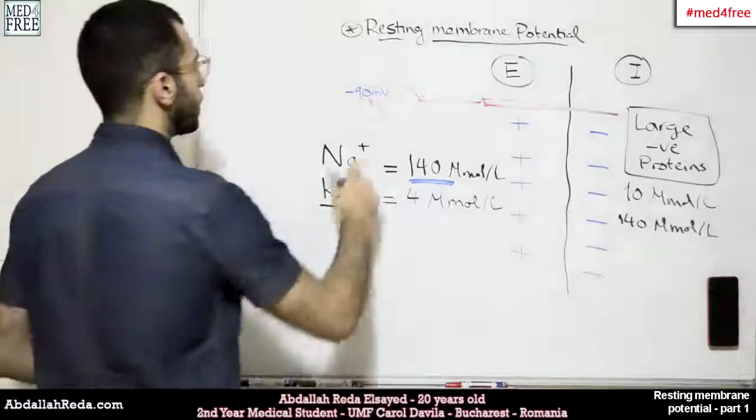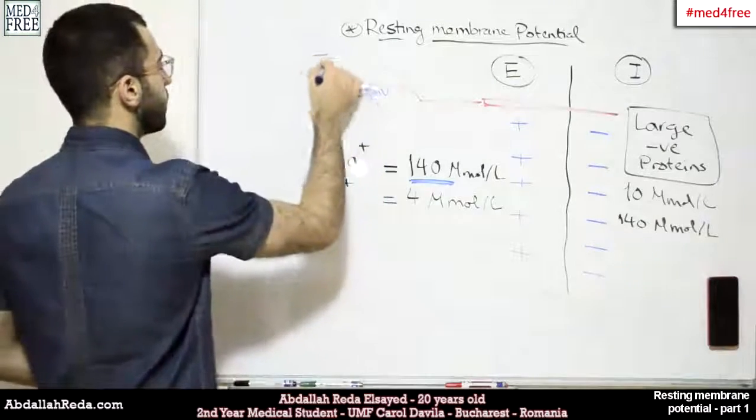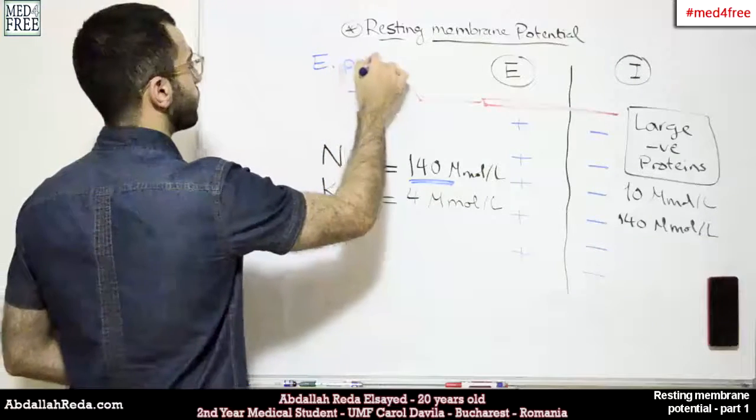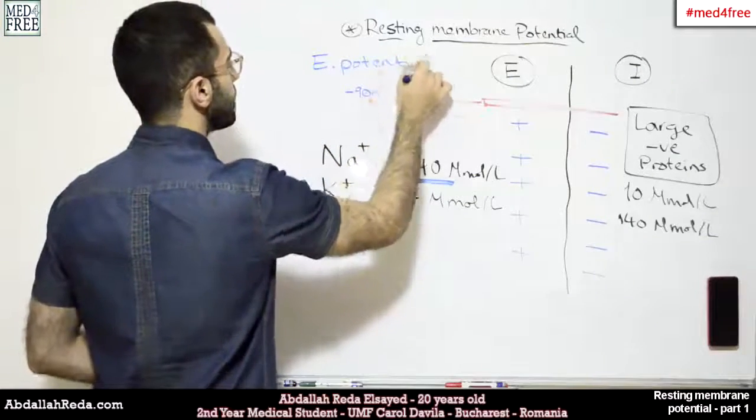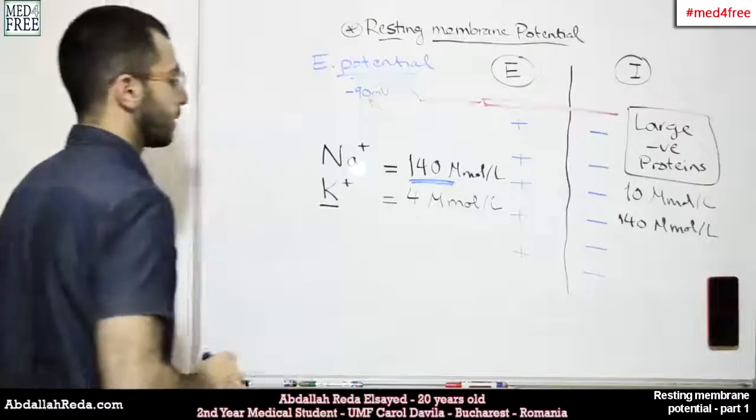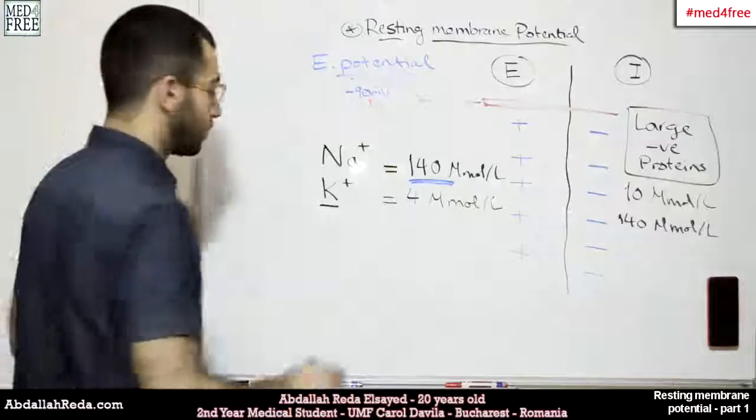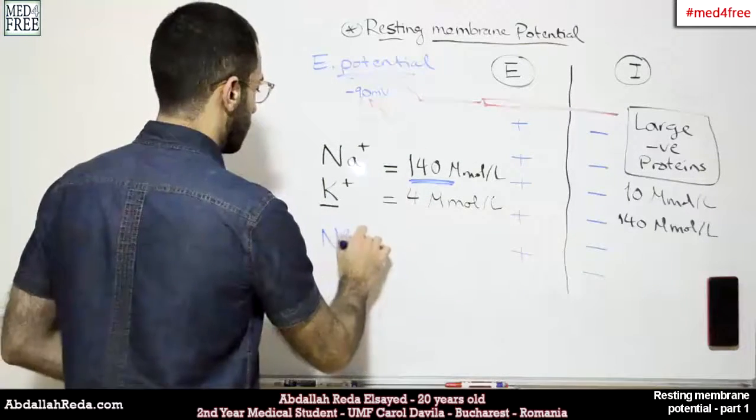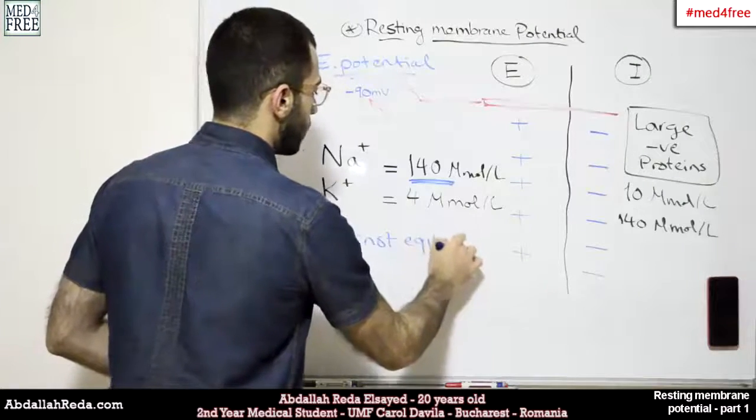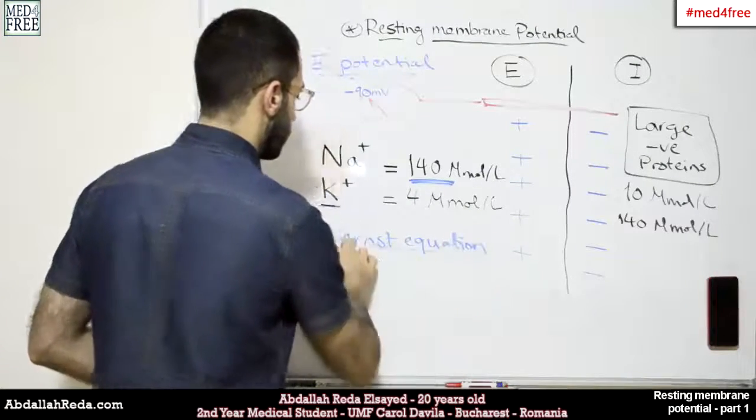Now, the case is, there is something called an equilibrium potential. And this equilibrium potential is calculated by an equation, which is called the Nernst equation. What does the Nernst equation do?